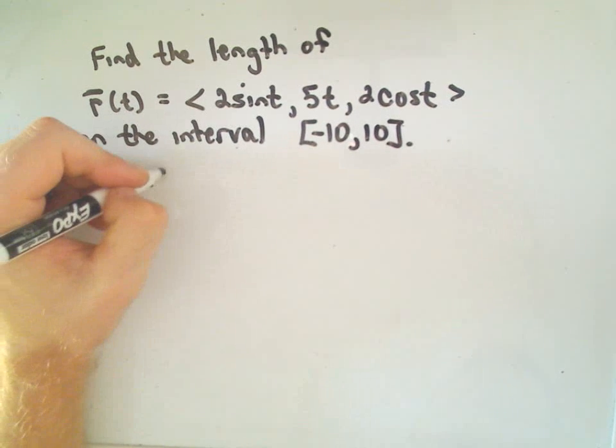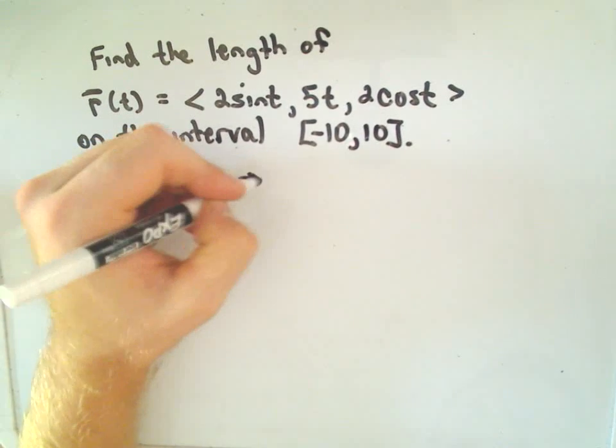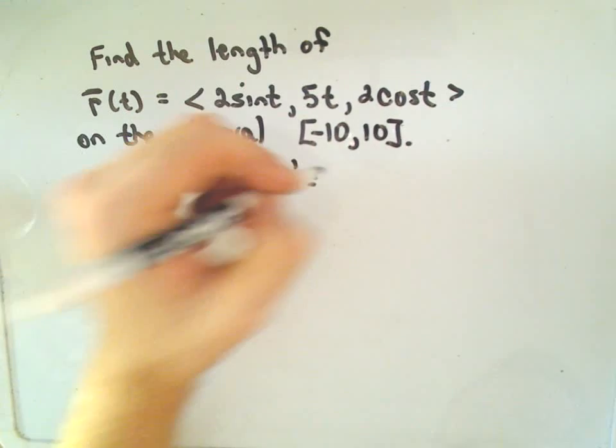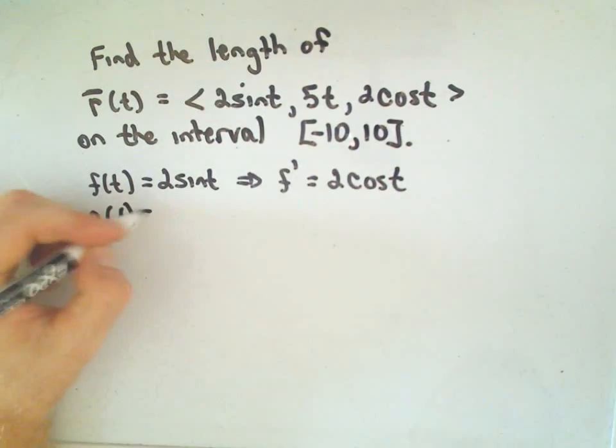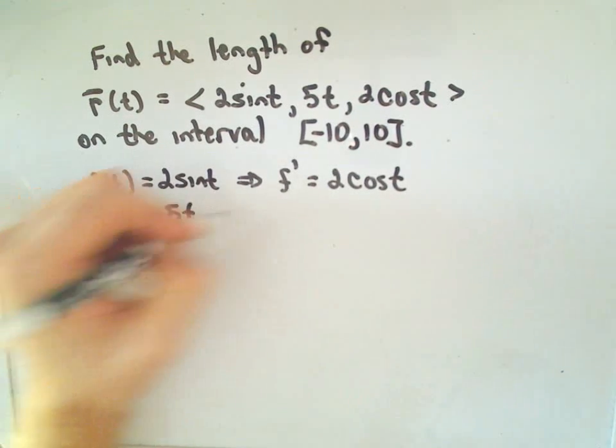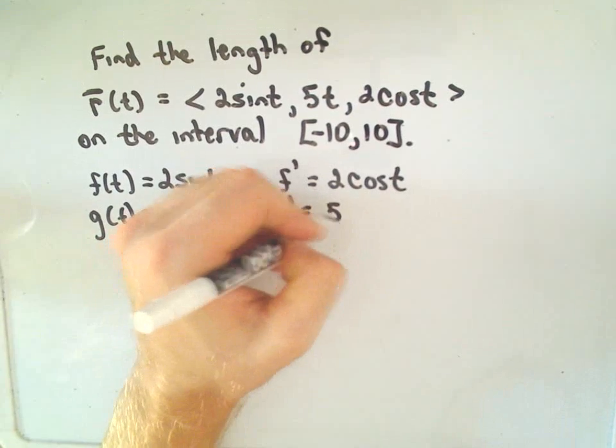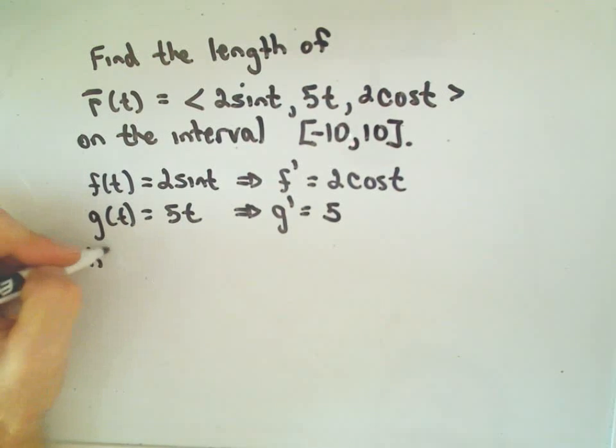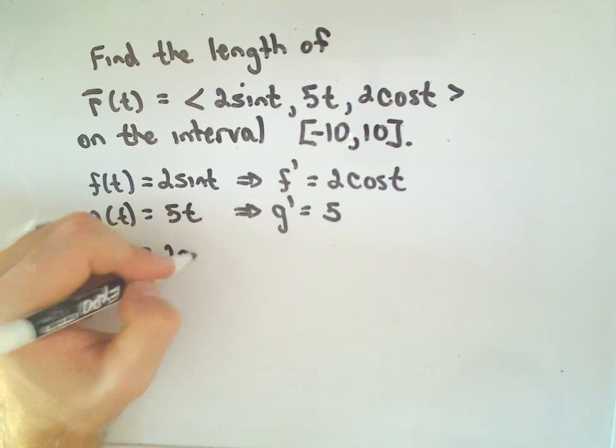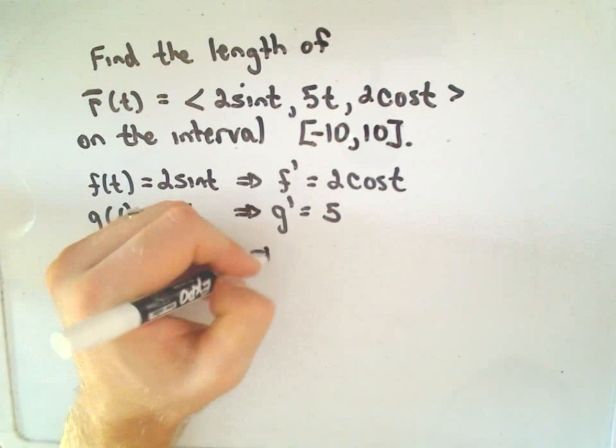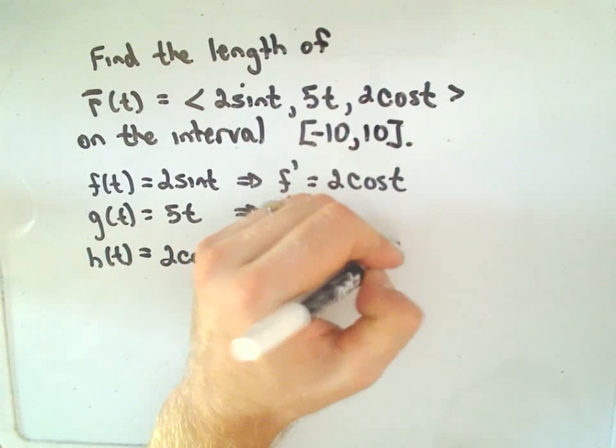I think the formula is relatively easy. f of t is given by two sine t. If we take the derivative of that, we'll simply get two cosine t. G of t, that's the five t portion. If we take the derivative of that, we'll simply get five. The parametric equation for the z coordinate, h of t, equals two cosine t. If we take the derivative of that, we'll simply get negative two sine t.